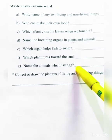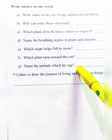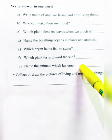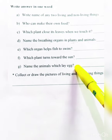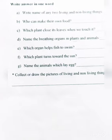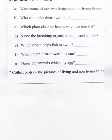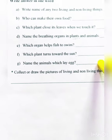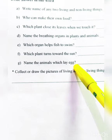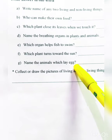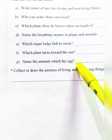Name the animals which lay eggs. Some animals like cows give birth to babies. But there are animals that lay eggs, such as insects, cockroaches, snakes, and crocodiles. All of these are egg-laying animals.